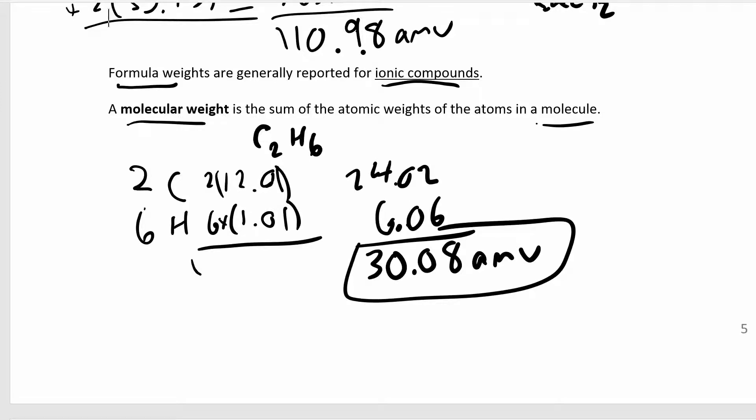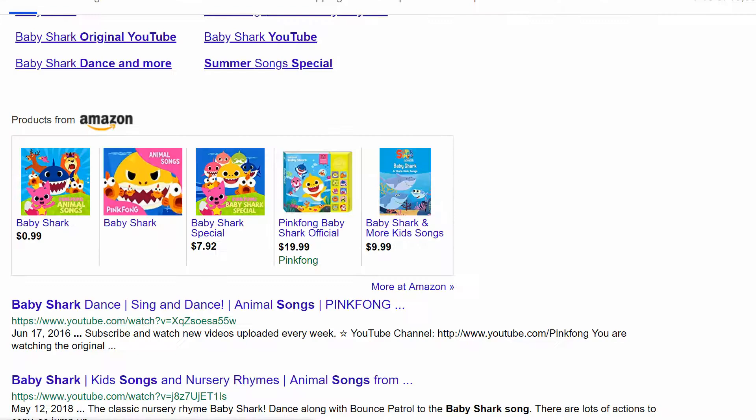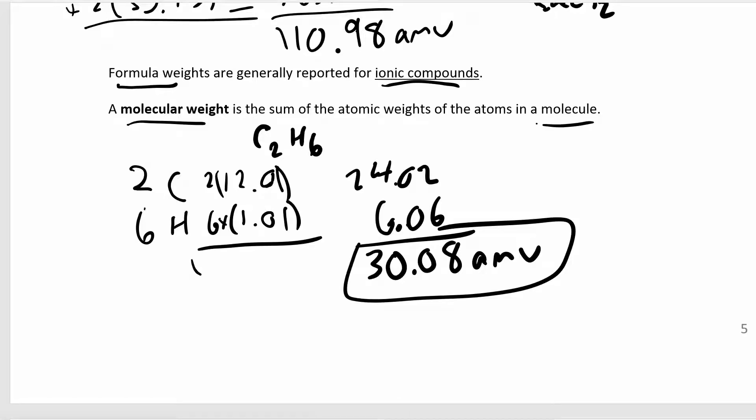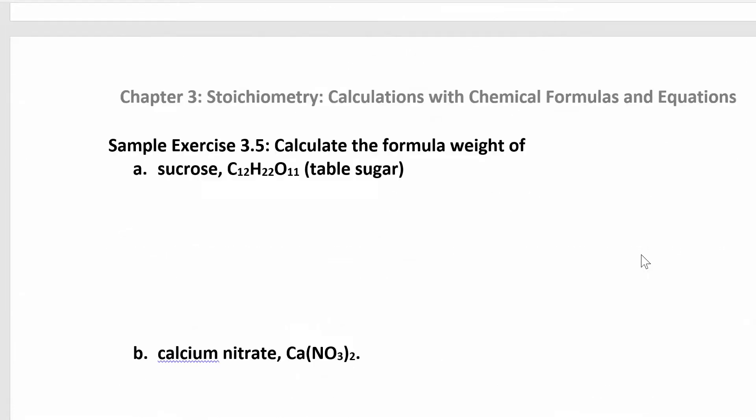That's a molecular weight. You calculate it the same way as formula weight. Formula weights are generally for ionic compounds, and molecular weights are for molecules. Remember, an ionic compound is a metal and a non-metal. Let's try a few more. You can pause the video and try to do sucrose and calcium nitrate.